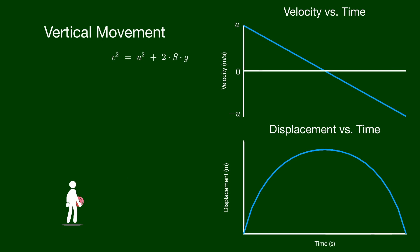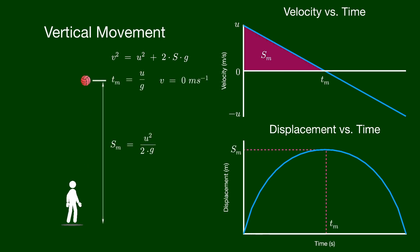We can use this kinematic equation to calculate the maximum displacement. When the velocity is zero the ball will reach its maximum displacement. In the displacement-time graph this is given at time t_m. In the velocity-time graph, the area under the curve gives the maximum displacement.